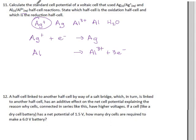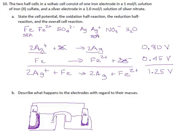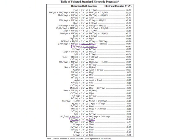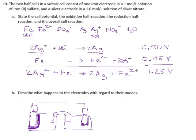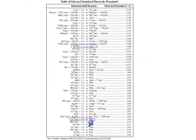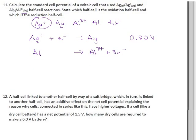We could combine these, but I don't think we need to in order to answer the question. Their question is to calculate the cell potential. So what are the voltages for these two half-reactions? Silver is 0.80 volts — that comes up a lot. And aluminum to Al³⁺: well, Al³⁺ to aluminum is −1.66 volts, but we're running this reaction in reverse. When you reverse a reaction, you reverse its voltage, so this will be +1.66 volts. So when you add those reactions, you add their voltages, and we get 2.46 volts for a silver-aluminum cell.